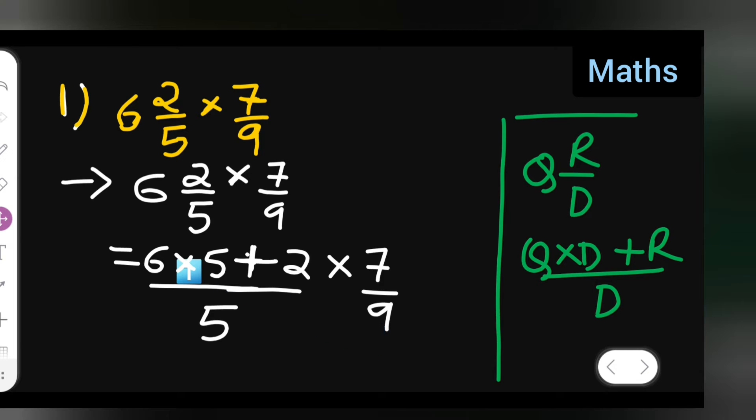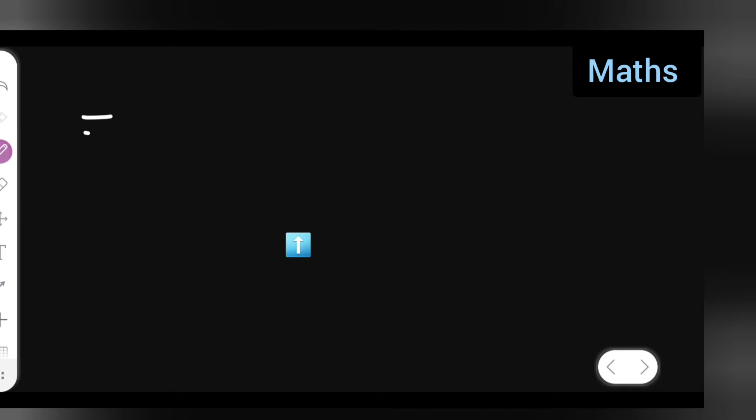This upon 5 multiplied by 7 upon 9. So 6 fives are 30, 30 plus 2 will give you 32.